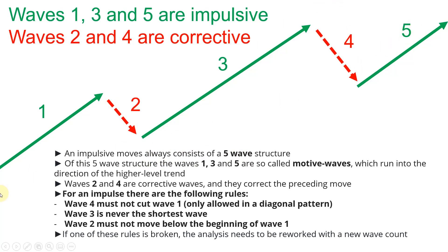Of this five wave structure, waves one, three and five are so-called motive waves, which run into the direction of the higher level trend. Waves two and four are corrective waves and they correct the preceding move. For an impulsive move there are the following rules. Wave four must not cut into wave one — this is not possible at all. It is allowed in a diagonal pattern, which is a more complex pattern we will talk about in later videos, but wave four must not cut into wave one. If wave four came down lower and would basically come into the price range of wave one, then the whole wave count would need to be redone because the rule was broken.